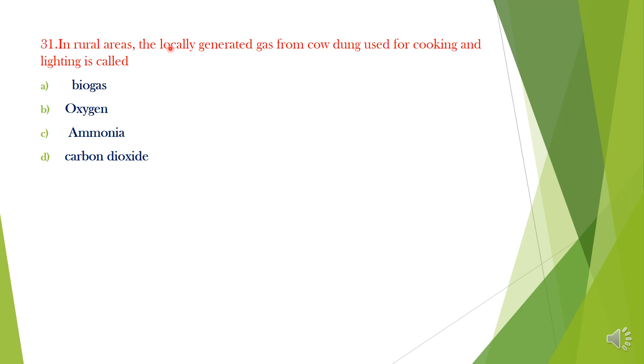Question 31. In rural areas, the locally generated gas from cow dung used for cooking and lighting is called: A. Biogas, B. Oxygen, C. Ammonia, D. Carbon dioxide. Answer is A, Biogas.